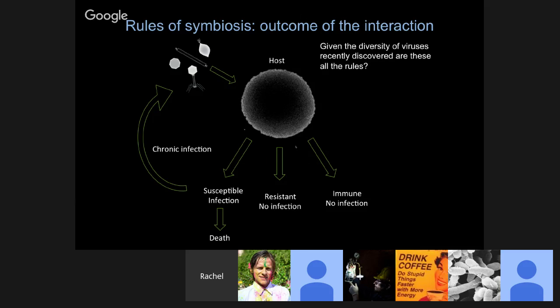Our suggestion is that we need to look more deeply into more interactions between wild viruses and their hosts because we haven't figured out all the rules of symbiosis. We looked at one virus-host pair and uncovered a completely new set of rules that lead to dormancy and death in an infection-independent way. If everybody would look at virus-host interactions, we would probably uncover a lot more interactions and a lot of different new surprises.